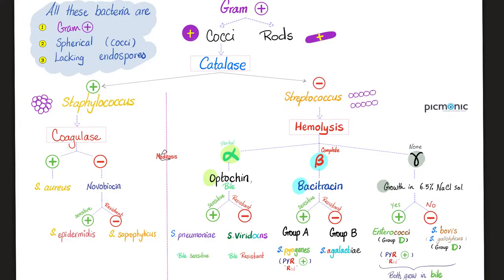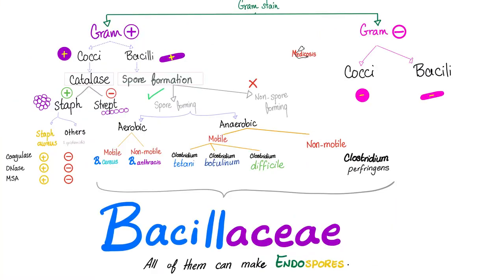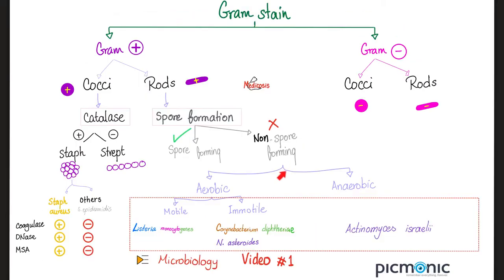Are Corynebacteria Gram-positive or Gram-negative? They are Gram-positive. Are they cocci? No, they are rods. Are they spore-forming? No, they are non-spore-forming. Do we consider them aerobic or anaerobic? They are aerobic or, at the very least, facultative anaerobic. Are they motile or immotile? They are immotile. So to recap: Corynebacteria are Gram-positive rods, non-spore-forming, aerobic, and immotile.